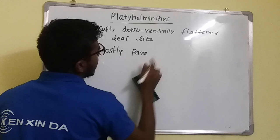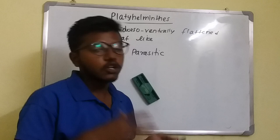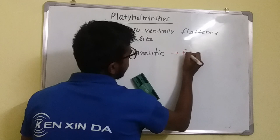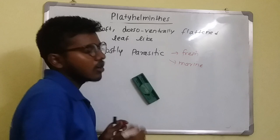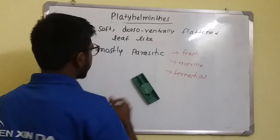Second character: they are mainly parasitic in form. Coming on to the habitat, they are either aquatic — freshwater or marine — or they may be terrestrial as well.